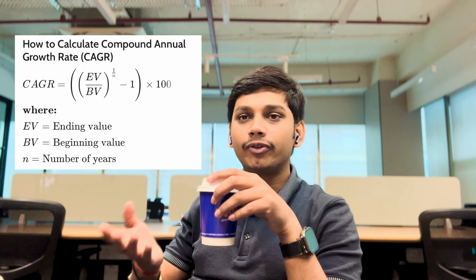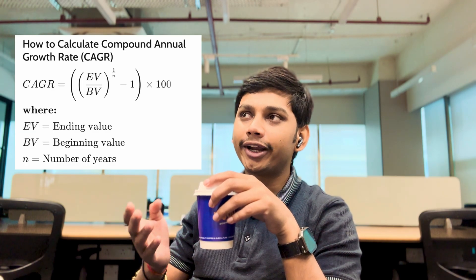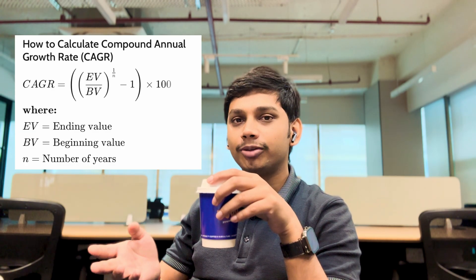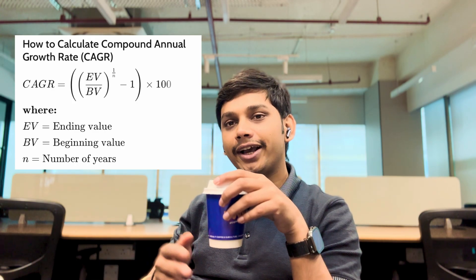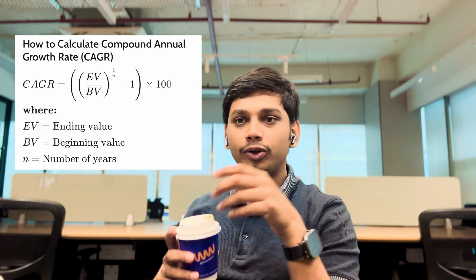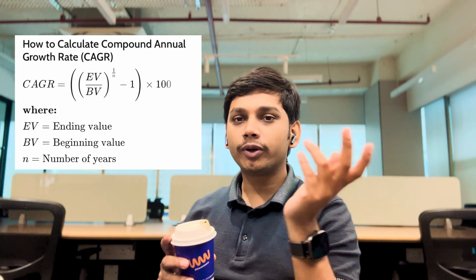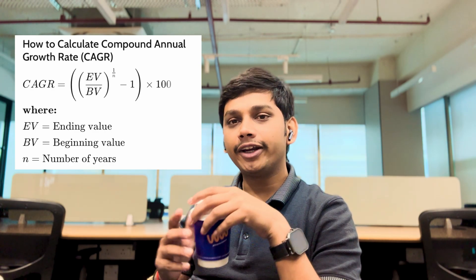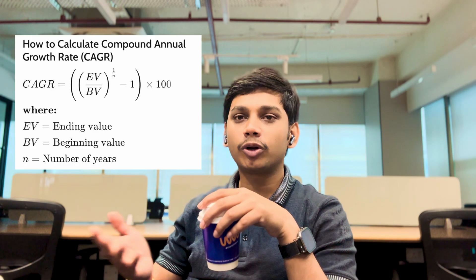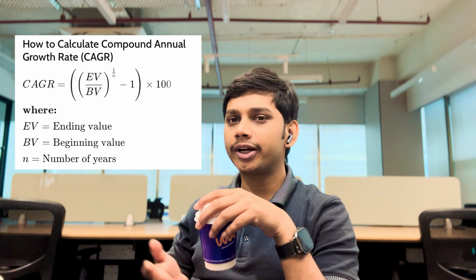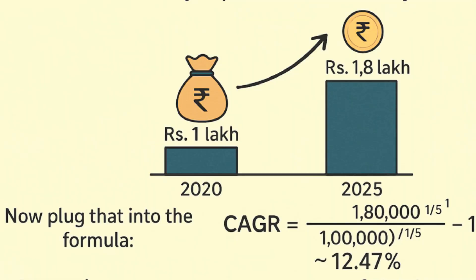If you read the formula for CAGR it looks complicated for a non-financial background, but don't let the formula scare you — it's actually very logical. You take how much your investment ended up at, divide it by what you started with, raise it to the power of one over the number of years, and subtract one. Easy, right?